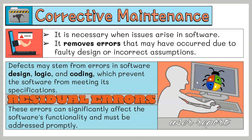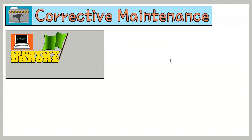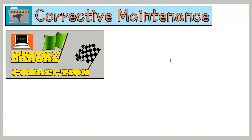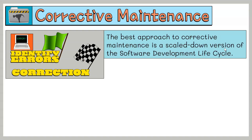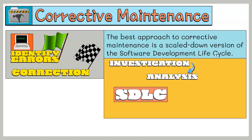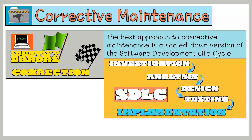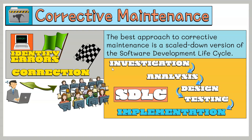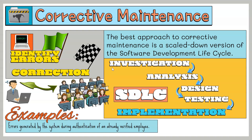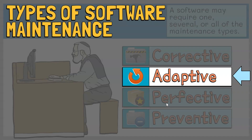Corrective maintenance is typically initiated by user-reported bug reports. It begins with identifying errors and ends with their correction in an operational system. The best approach is a scaled-down version of the software development lifecycle, involving investigation, analysis, design, and testing before system implementation. Any new updates are first checked in a test environment before being applied to the operational system. Some examples include errors generated by the system during authentication of an already verified employee, and program errors resulting in incorrect output.